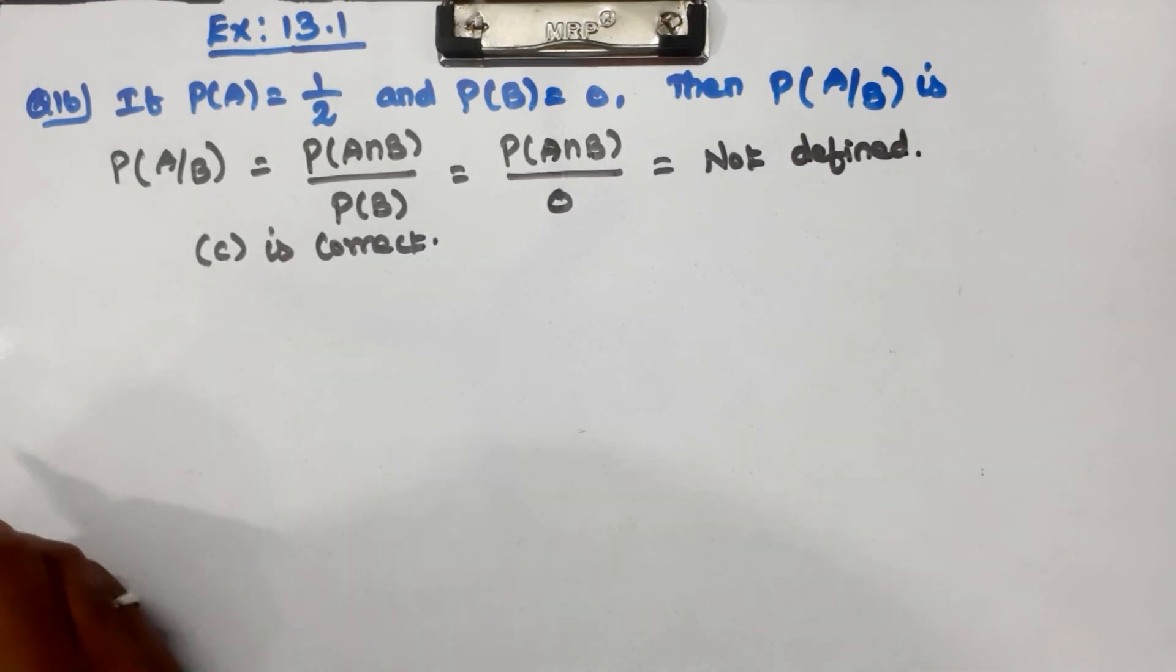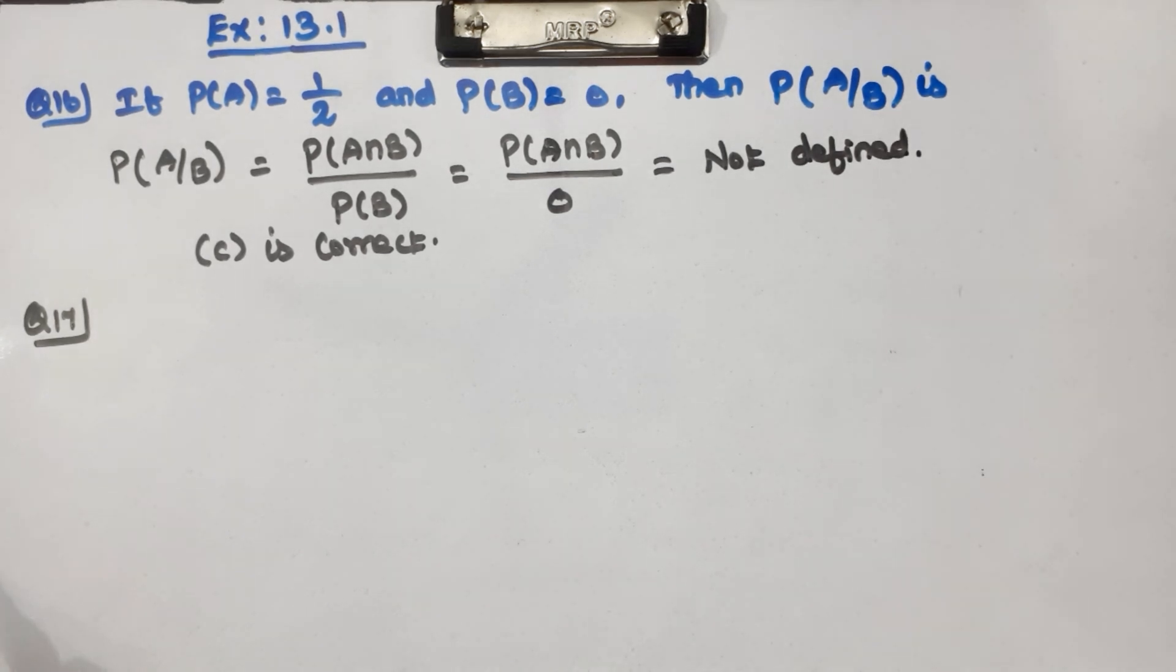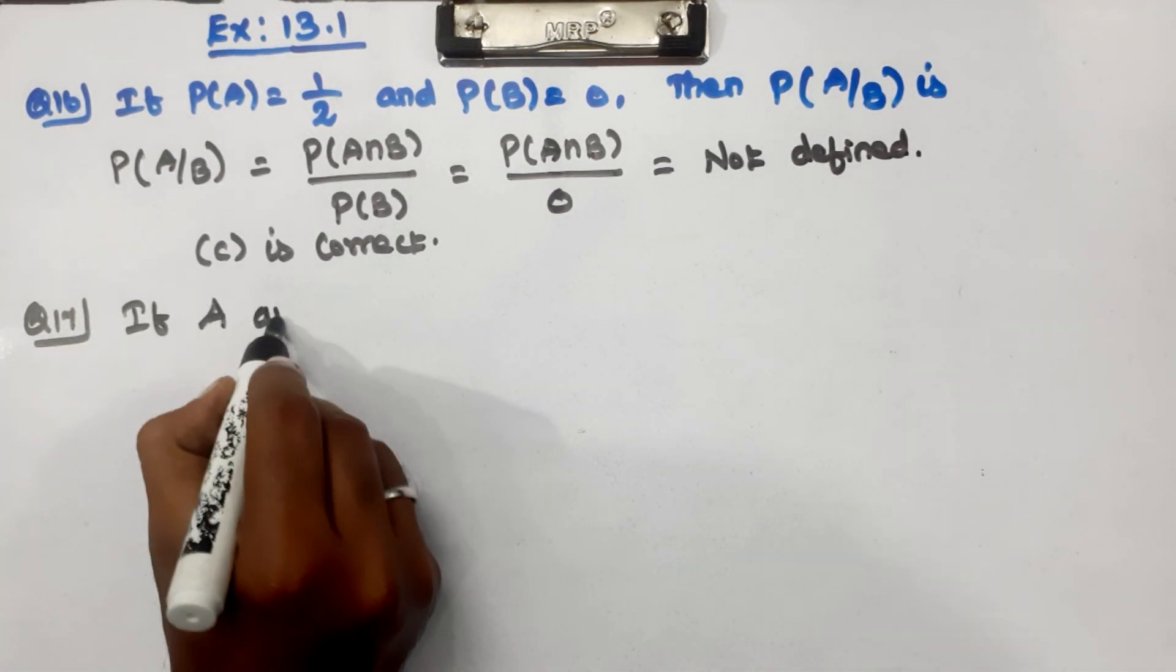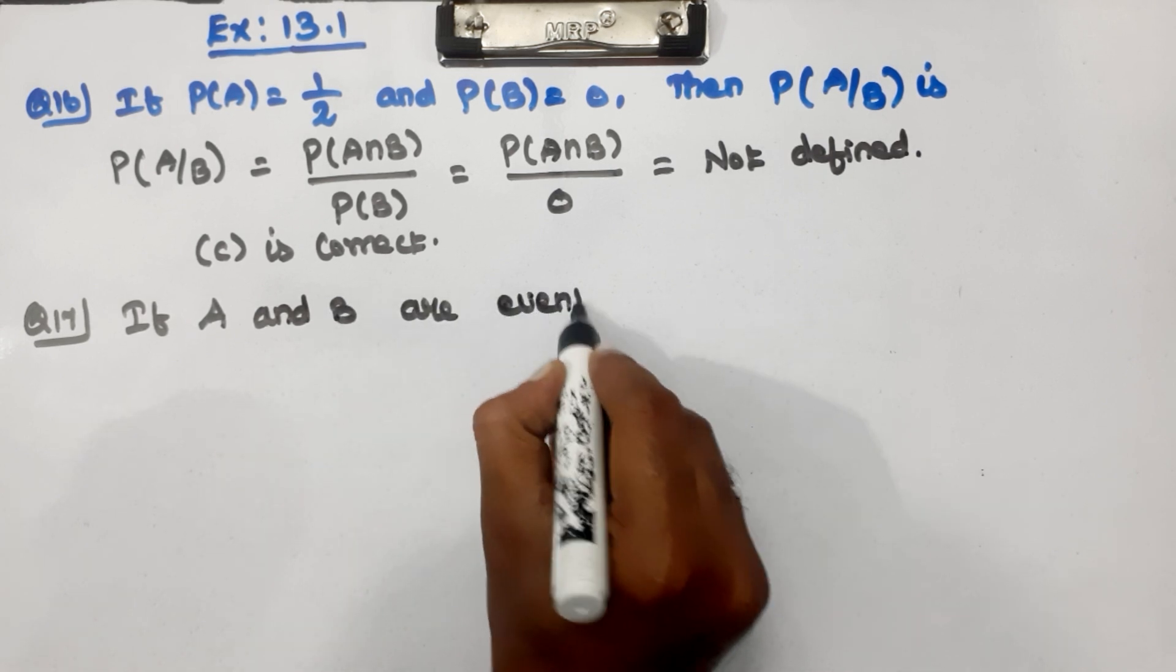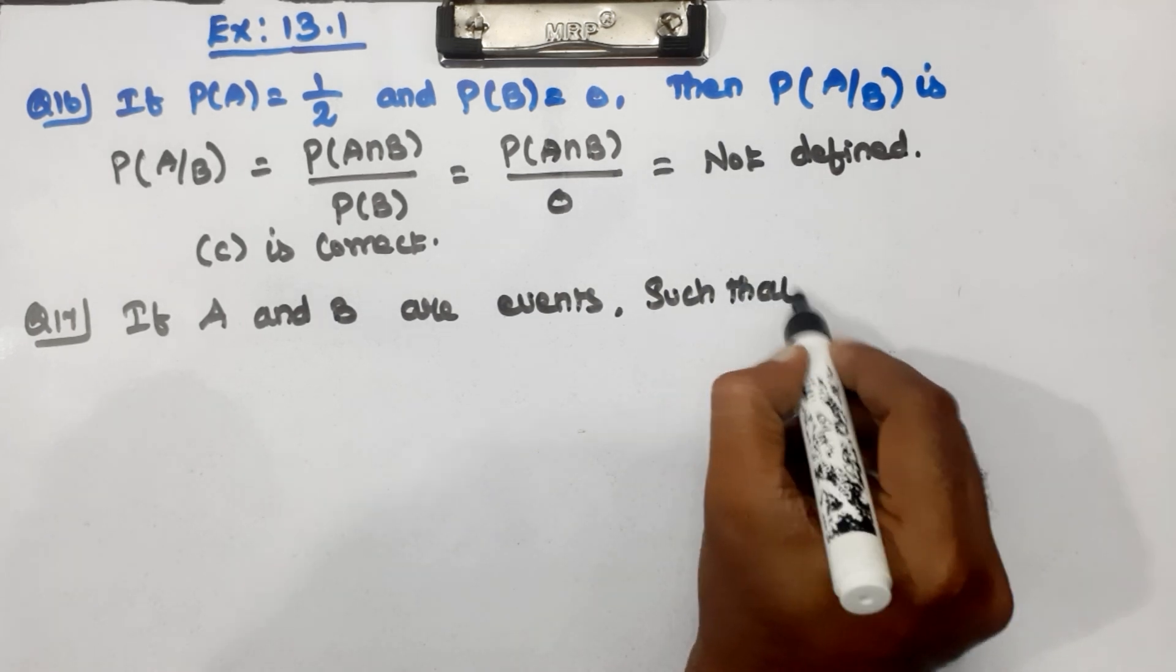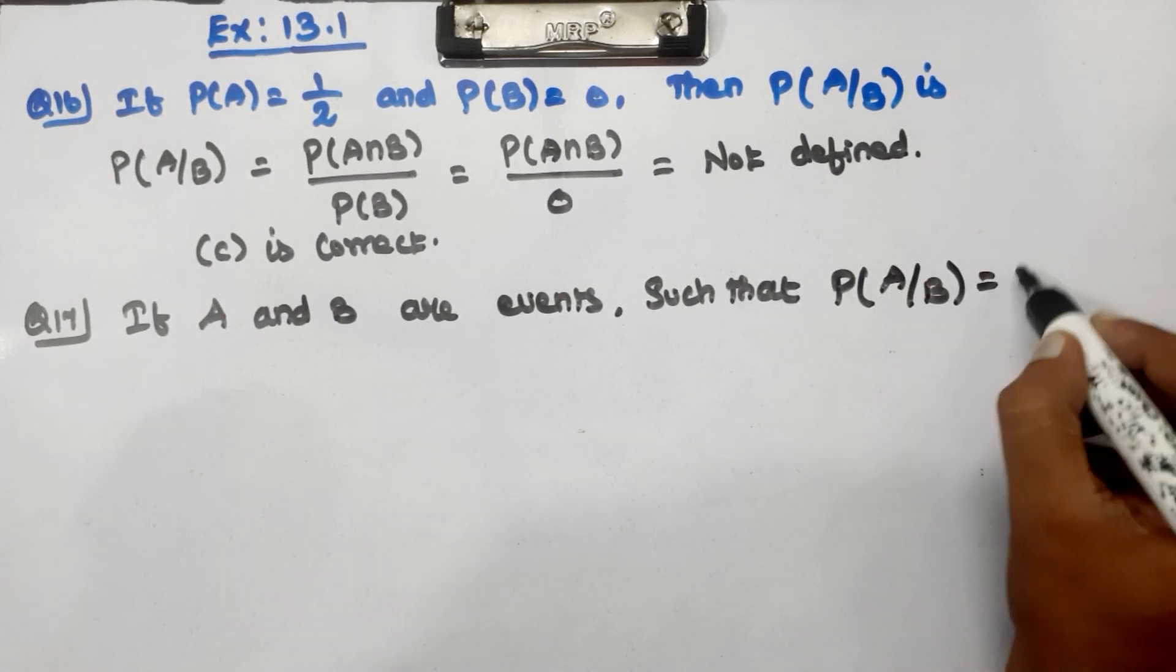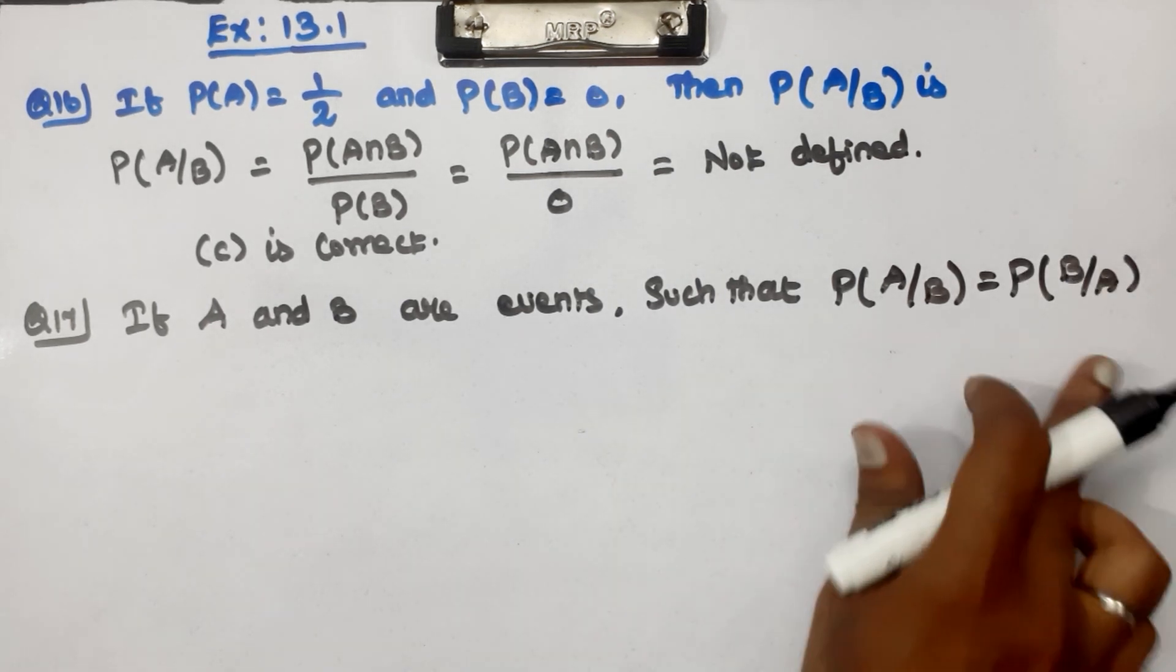Now question number 17. Choose the best answer. If A and B are events such that probability of A conditional on B equals probability of B conditional on A, what can we conclude?